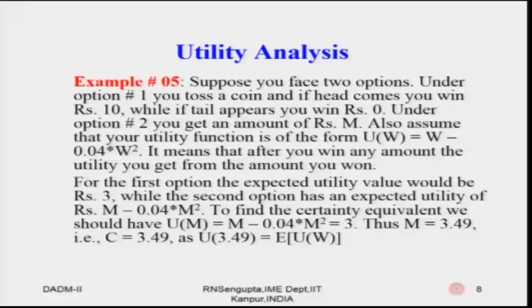Let us consider an example. Under option 1, you toss an unbiased coin: if heads you win 10 rupees, if tails you win 0 rupees — each with probability half. Under option 2, you receive a certain amount of rupees M. The utility function is U(W) = W − 0.04·W².